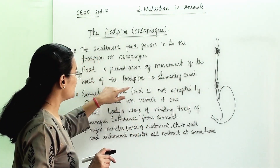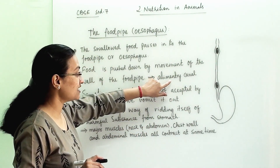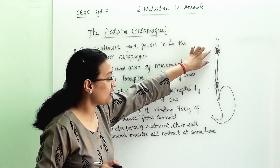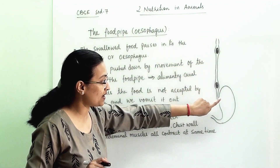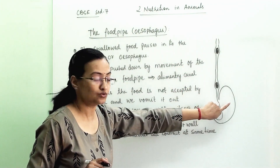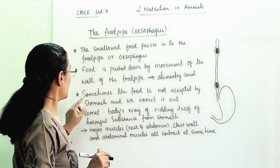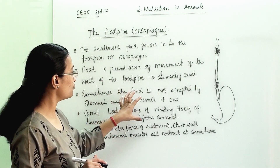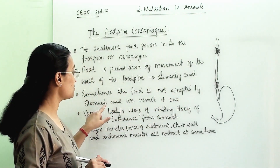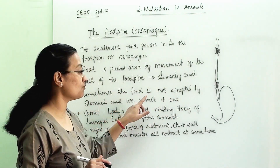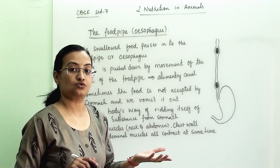Peristalsis happens throughout the alimentary canal. Part by part, food passes through the food pipe and goes to the stomach. Sometimes the food is not accepted by the stomach and we vomit it out.